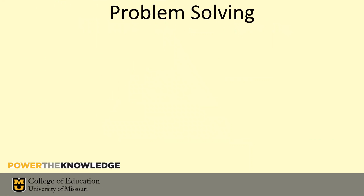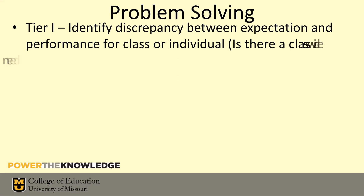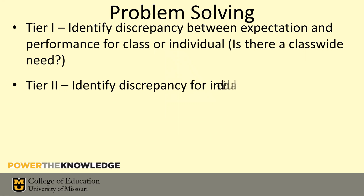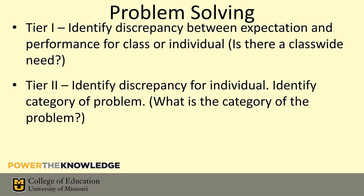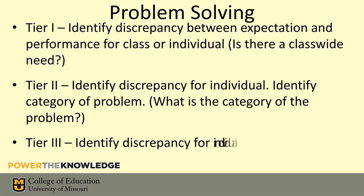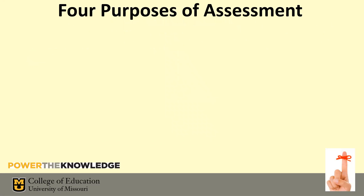All we're doing in the RTI framework is answering three questions. Question number one: is there a class-wide need? The primary problem analysis question for tier two is: what's the category of the need? Once we've identified and addressed a class-wide need, we can see the category of the problem for individual kids. And then lastly: what's the causal variable? By causal variable, we mean the environmental variable we can manipulate that is most closely related to the problem. In the RTI framework, that's all you're trying to do — answer those three questions.